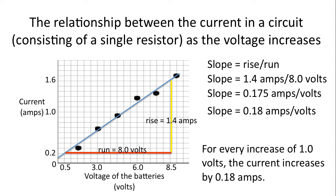It's very important to interpret what the slope means. So in this situation, it means the following. For every increase of 1.0 volts, the current increases by 0.18 amps.